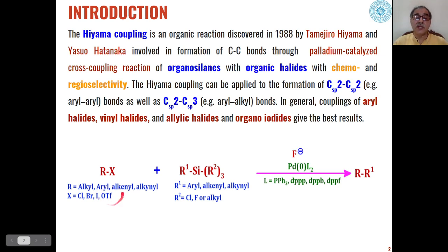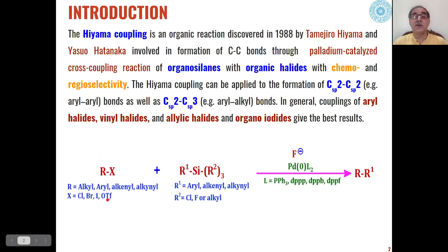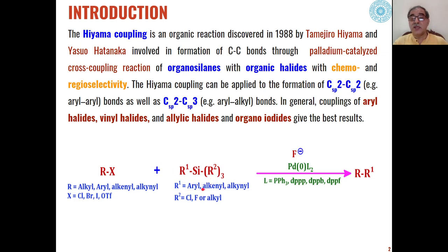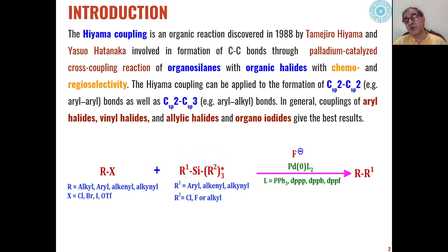In addition, X may be a triflate, so pseudohalides can also be used for these types of coupling reactions. When these types of organic halides or pseudohalides react with organosilanes, the R groups may be aryl, alkenyl, or alkynyl, and the R2 group may be chloride, fluoride, or alkyl. Depending upon the type of substitution, we can use different types of organosilanes.